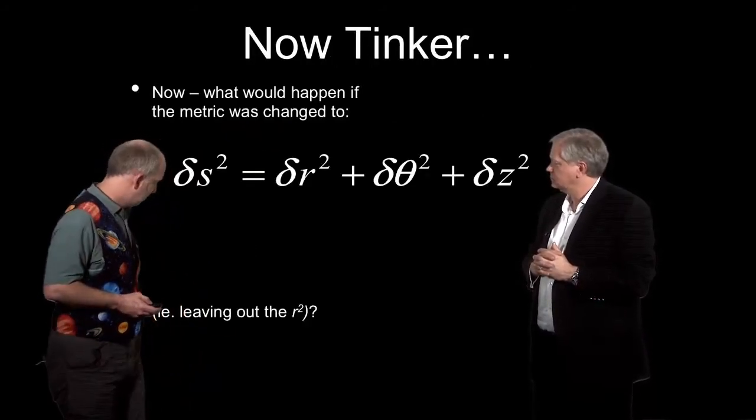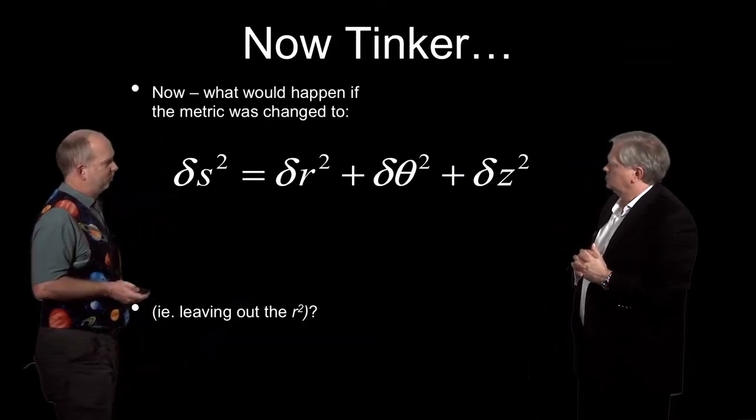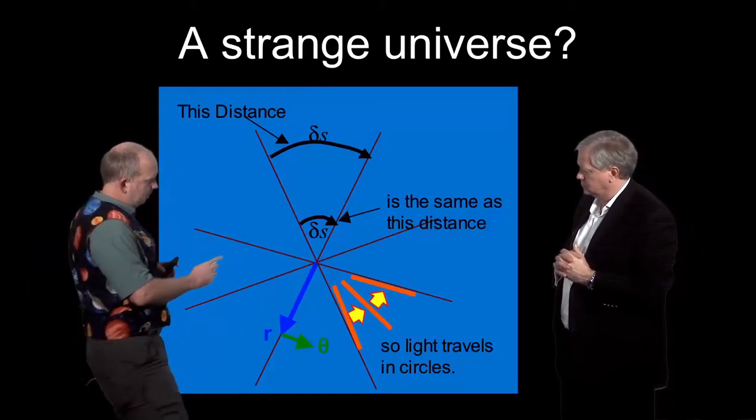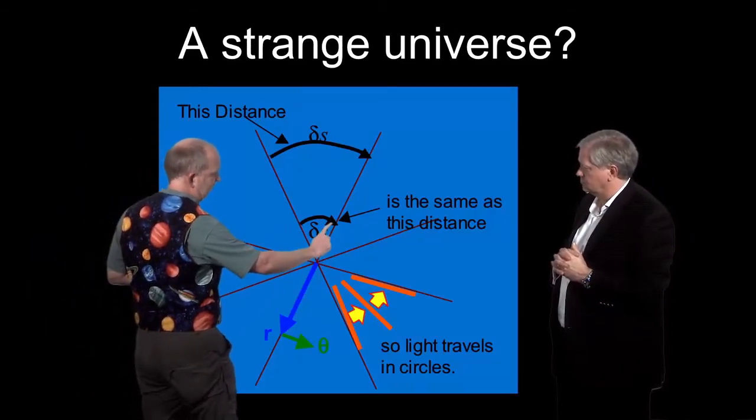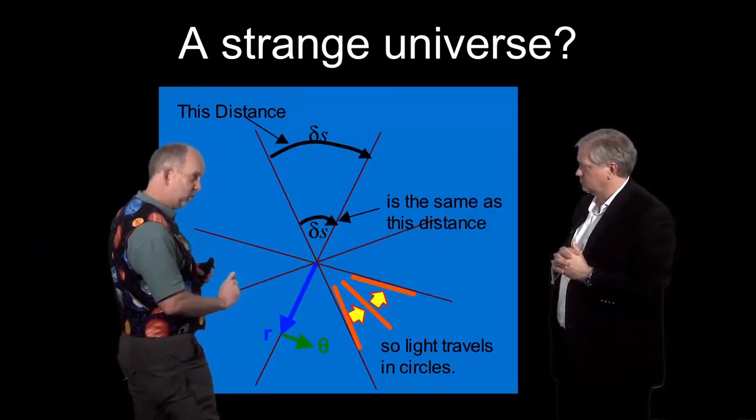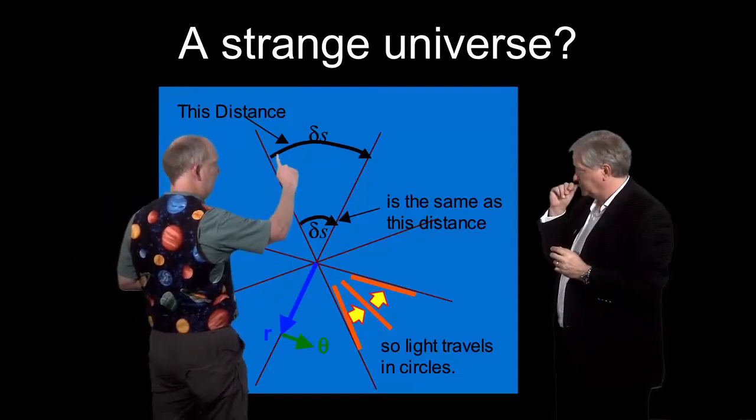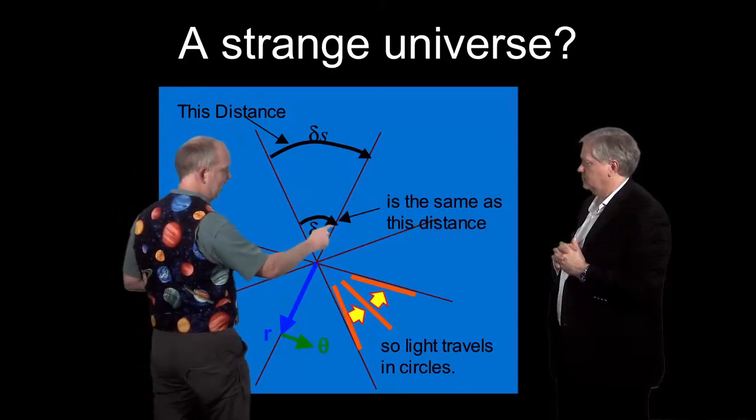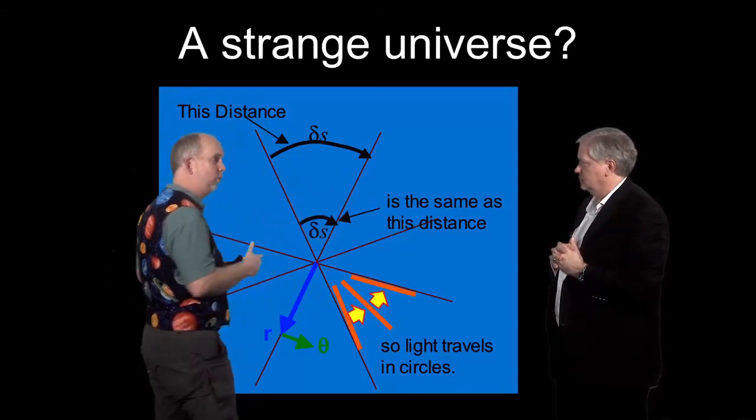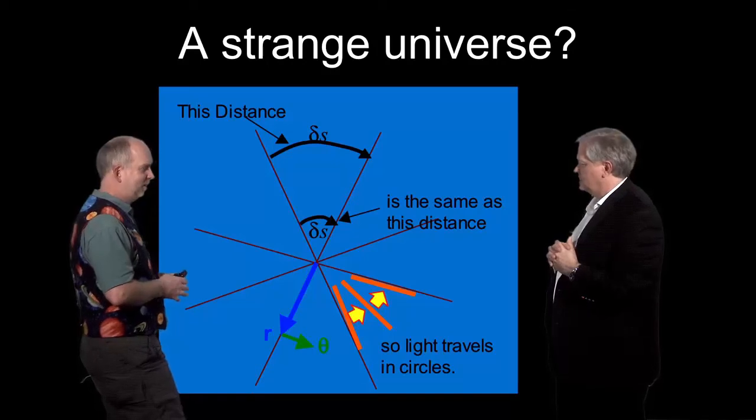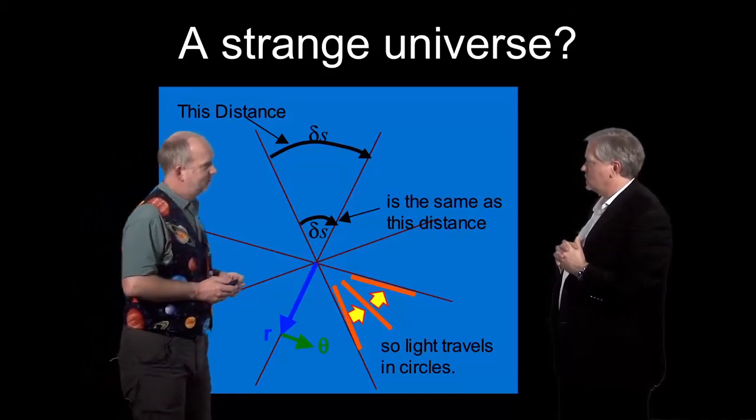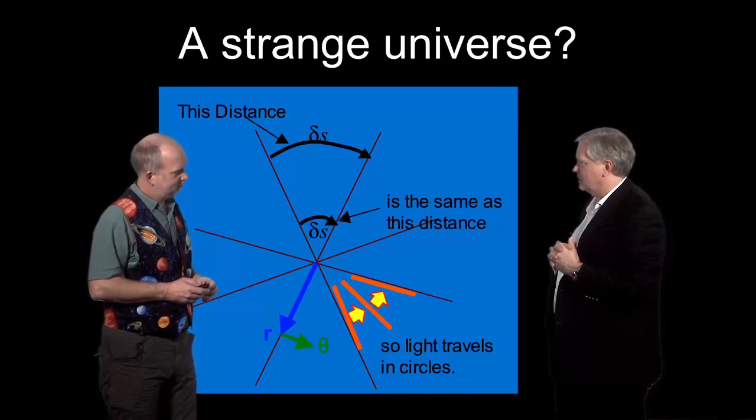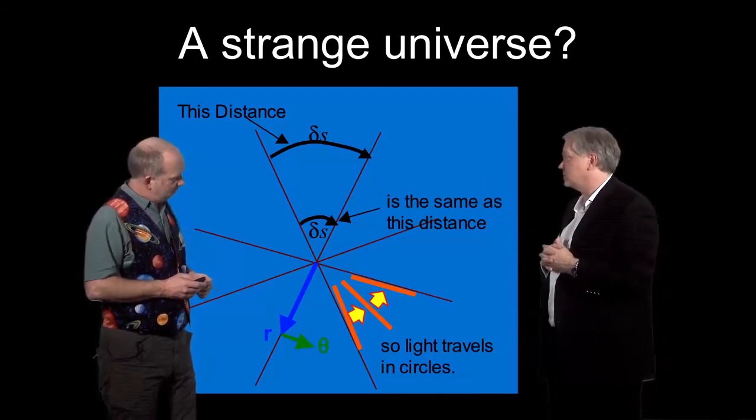This is our universe, common sense. But let's imagine we get rid of that R squared. What's going to happen in this universe? We've got angle theta. If you move from there to there, it's a given change in angle. Moving from there to there is the same given change in angle. So those are actually the same ds, the same distance, according to this metric.